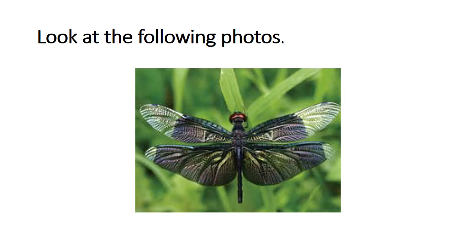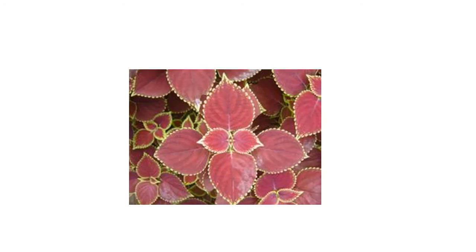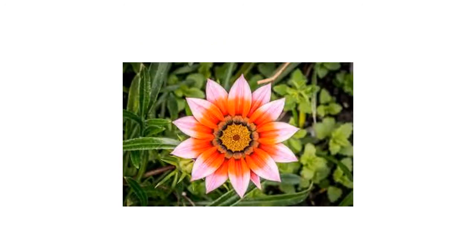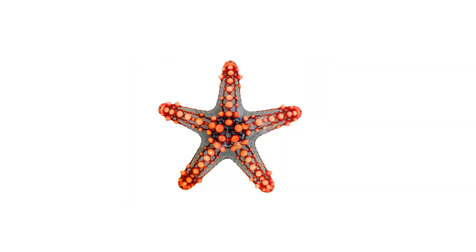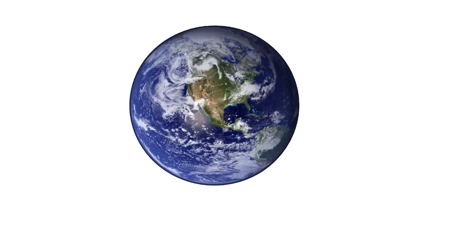Let's look at certain photos. This is a dragonfly, this is a clover plant, this is a kiwi fruit sliced in half, this is a lady's finger also sliced in half, this is a coleus plant, this is a dahlia, this is a fern plant, this is a starfish, this is a sliced orange fruit, and this is our planet Earth.